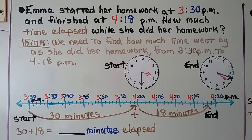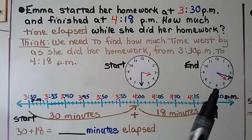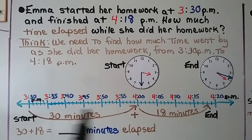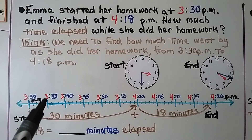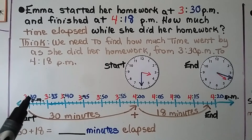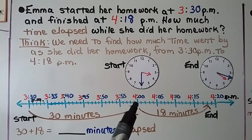Emma started her homework at 3:30 p.m. and finished at 4:18 p.m. How much time elapsed while she did her homework? We need to find how much time went by from 3:30 p.m. to 4:18 p.m. We can make a timeline — just a number line — starting at 3:30 p.m., and make marks of 5-minute increments from 3:30 p.m. to 4 o'clock p.m., which would be 30 minutes.